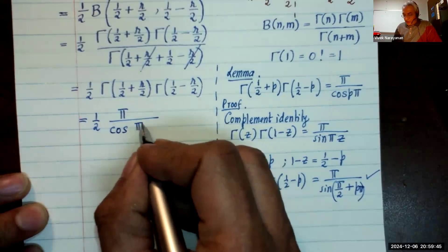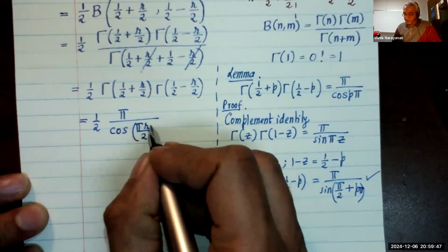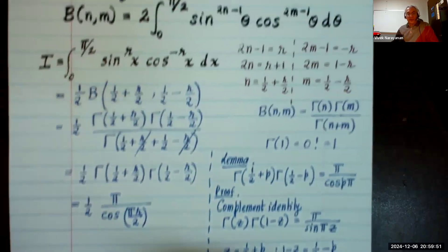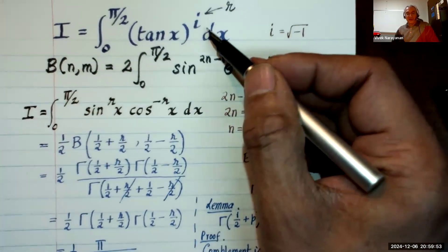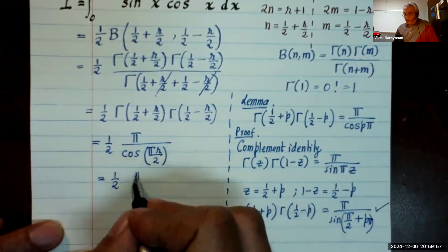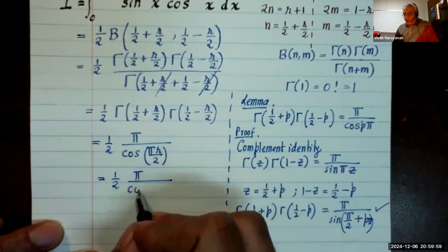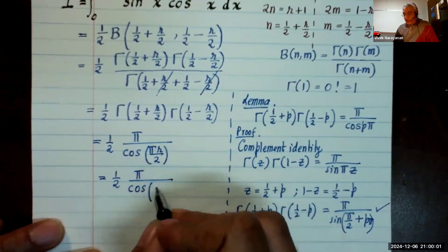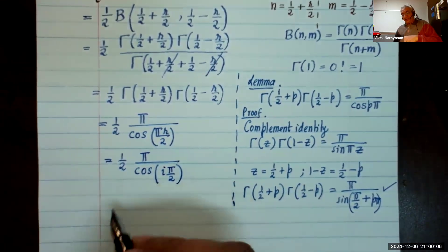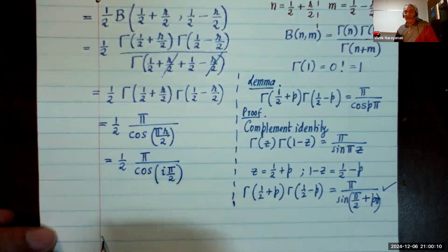Let's use that result. So I have 1/2 π divided by cosine, in this case p is equal to r/2, so cosine of πr/2. And now finally I'm going to put what r is: r is equal to the complex number i. So this gives me 1/2 π over cosine iπ/2.